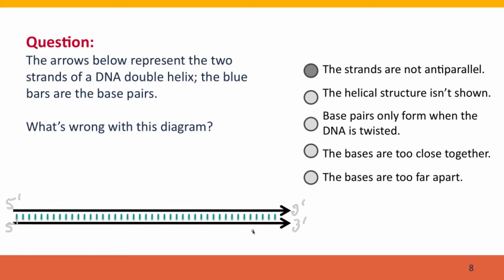The bases can't pair with each other when they're in the same orientation at all. Even if an A is opposite a T, they can't form a base pair when their strands are running in the same orientation.